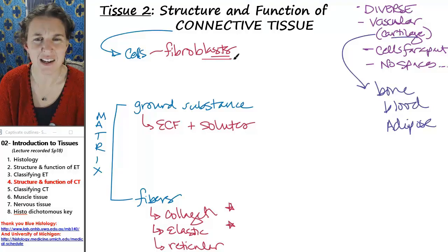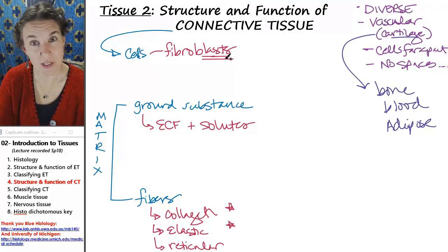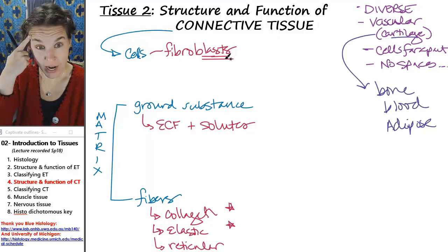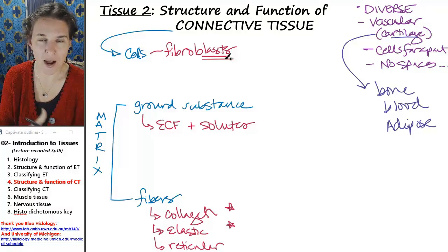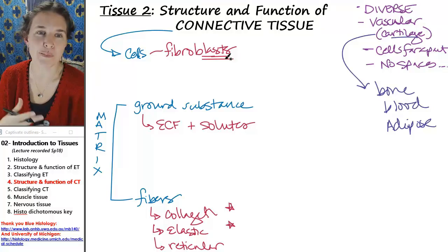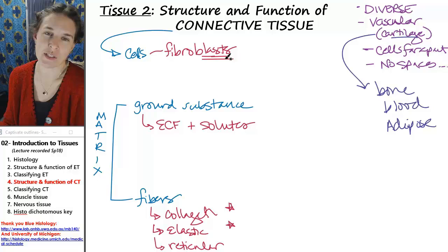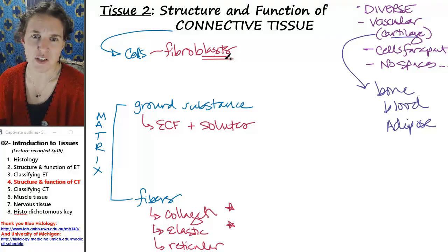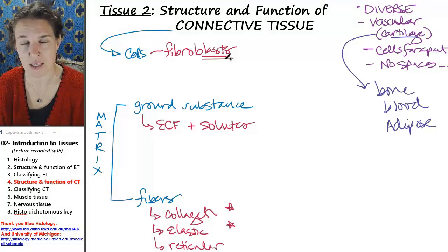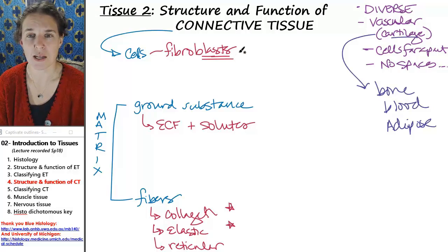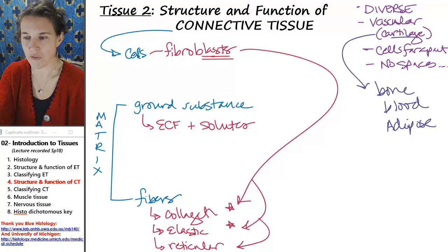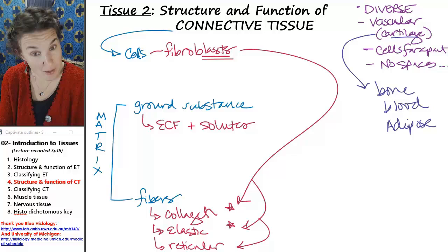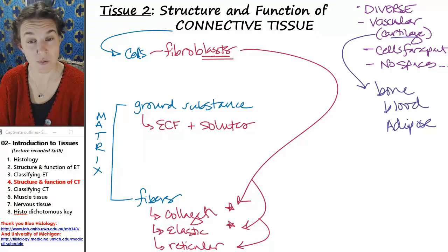Most of the tissues have cells called fibroblasts. Blast, I don't know, we should look up what it actually means. But in my brain, blast means building. And so fibroblasts are blasting out fibers. It's like they're pooping out massive amounts of fibers. So they're actually the fiber builders in connective tissues. They're building collagen, elastic, and reticular fibers and barfing them into the matrix, which is how you end up with them.